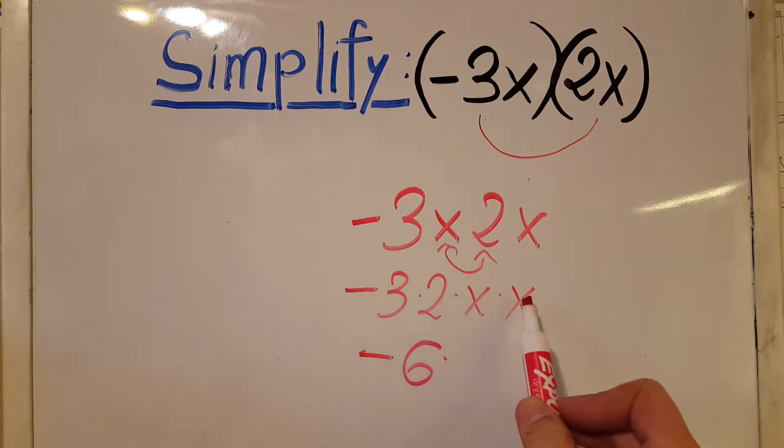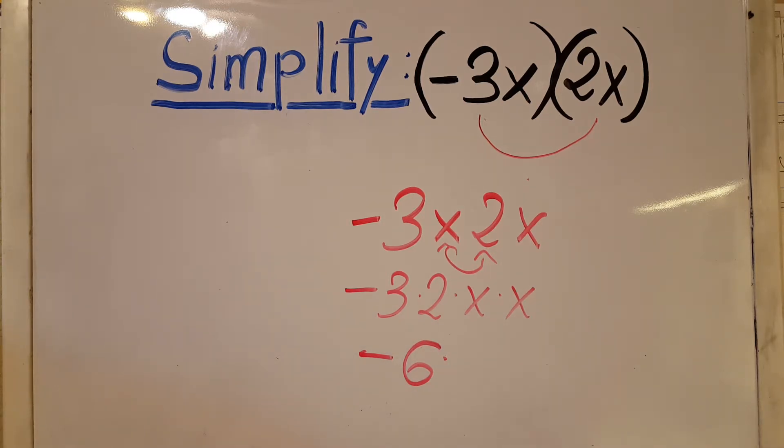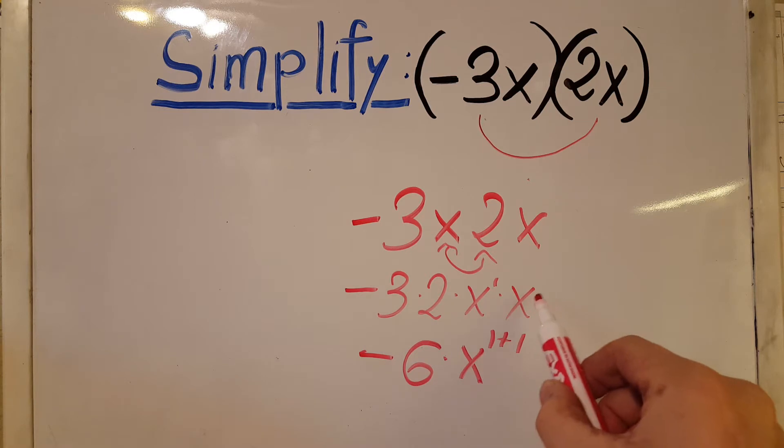And over here, x times x, we're gonna use the rule of exponents where we're gonna have x to the 1 plus 1. This is x to the 1, this is x to the 1, so we're gonna add the exponents.